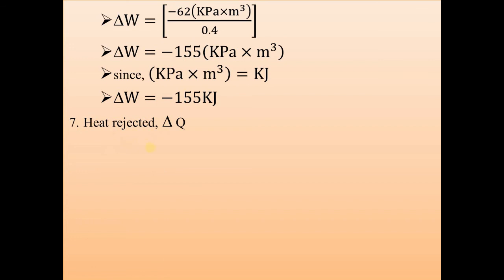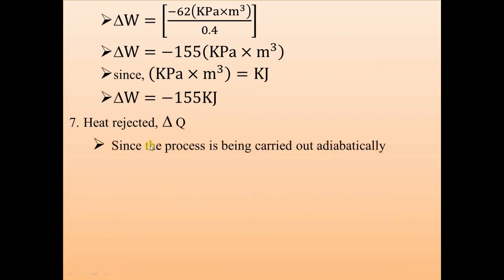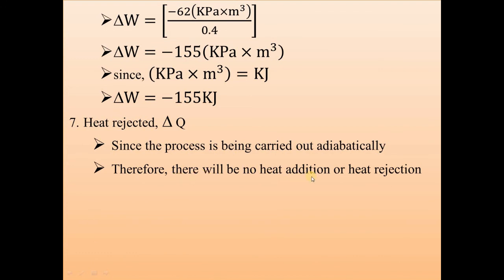Now we find the heat rejected. As stated earlier, in an adiabatic process — whether expansion or compression — there is no heat transfer. There is no heat rejection or heat addition. Therefore, for this adiabatic compression process, ΔQ = 0 kJ. The amount of heat rejected is 0 kJ.